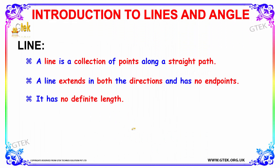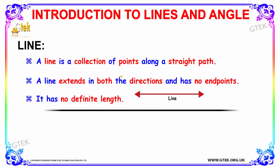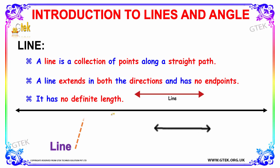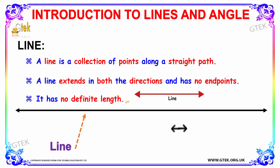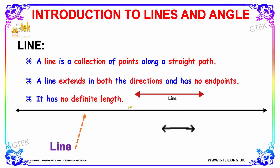Let's begin with the concept of Line. A line is a collection of points along a straight path. A line extends in both directions and has no definite length.